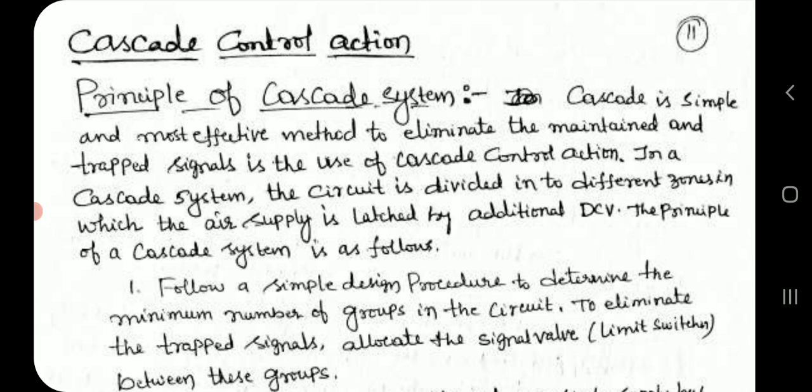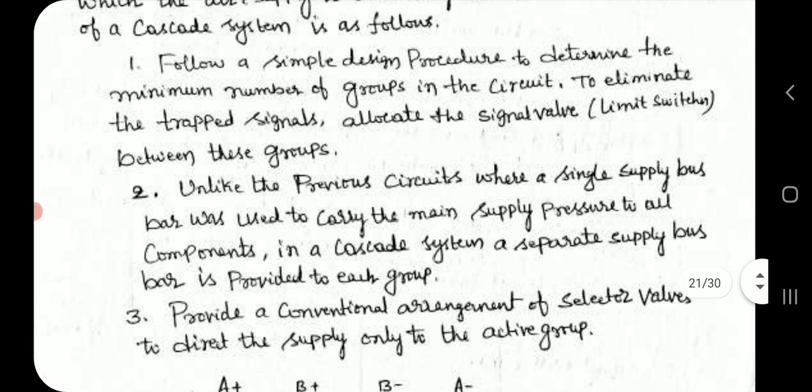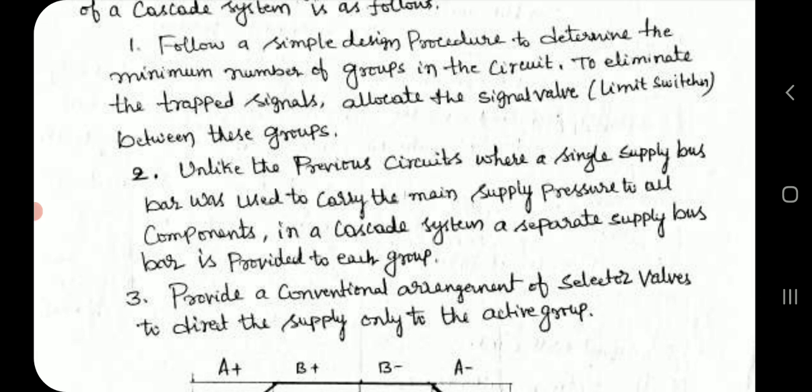The principle of a cascade system is as follows: First, follow a simple design procedure to determine the minimum number of groups in the circuit. To eliminate the trapped signals, allocate the signal valves and limit switches between these groups.